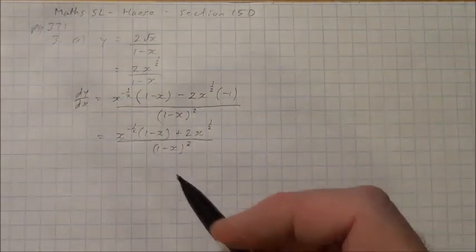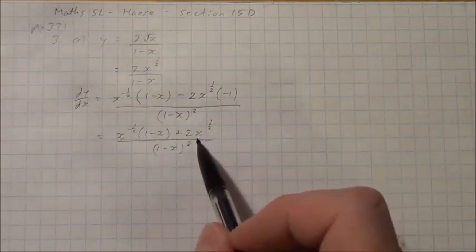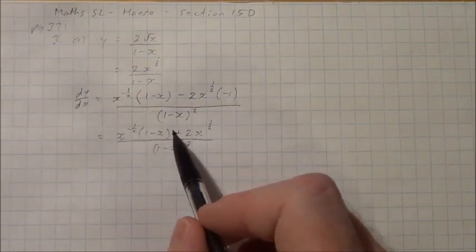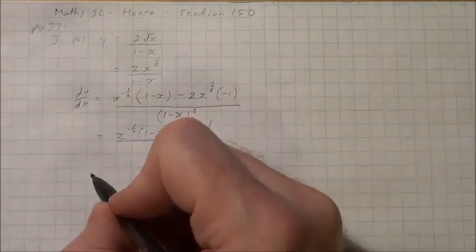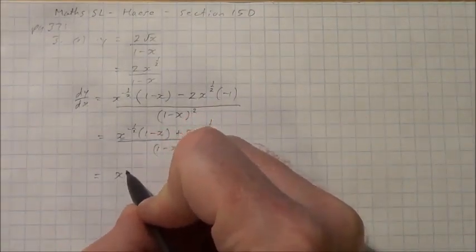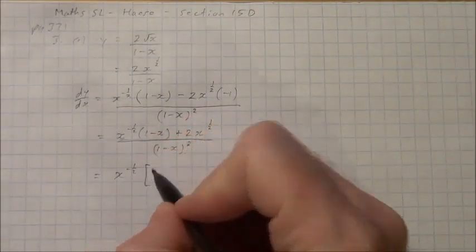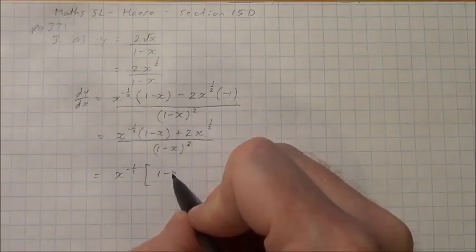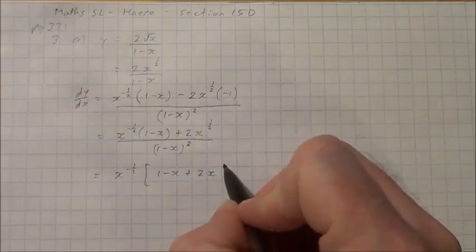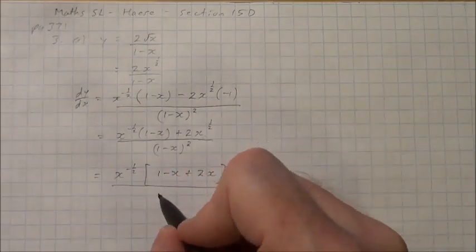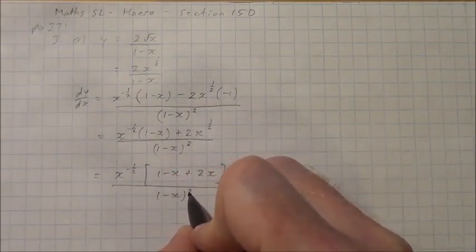Now I'll factor out what's common in the numerator. I see that x to the negative one-half is the smallest power of x, so I'll factor that out. This gives x to the negative one-half factored out, leaving (1 minus x), and then this leaves plus 2x, all over (1 minus x) squared.